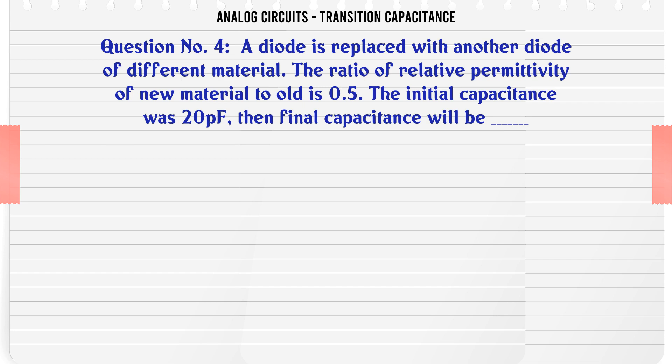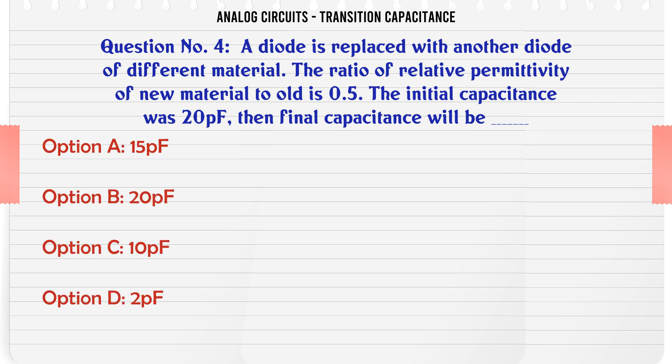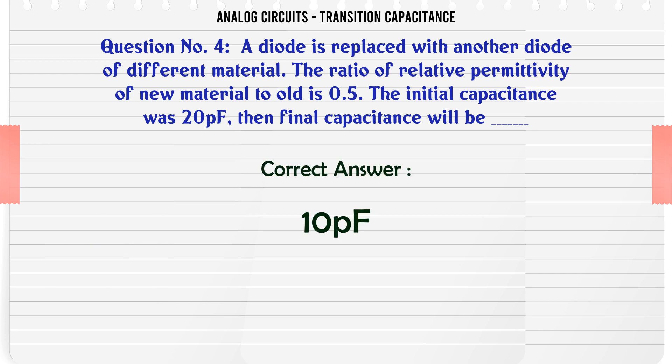A diode is replaced with another diode of different material. The ratio of relative permittivity of the new material to old is 0.5. The initial capacitance was 20 PF. The final capacitance will be: A: 15 PF, B: 20 PF, C: 10 PF, D: 2 PF. The correct answer is 10 PF.